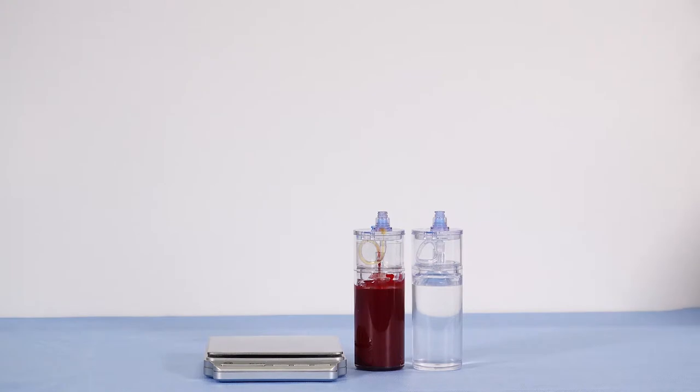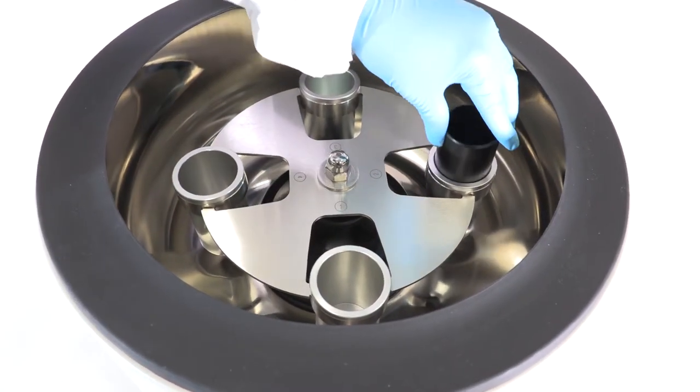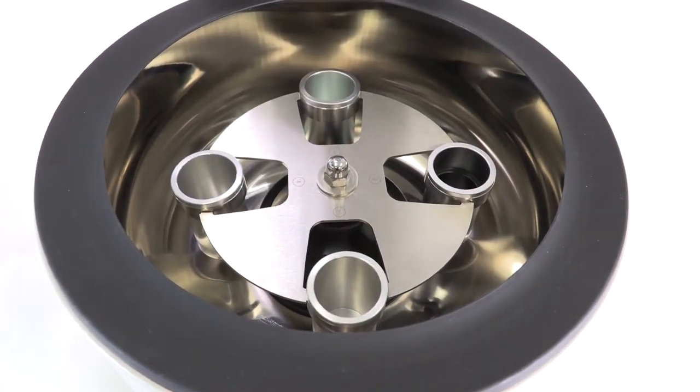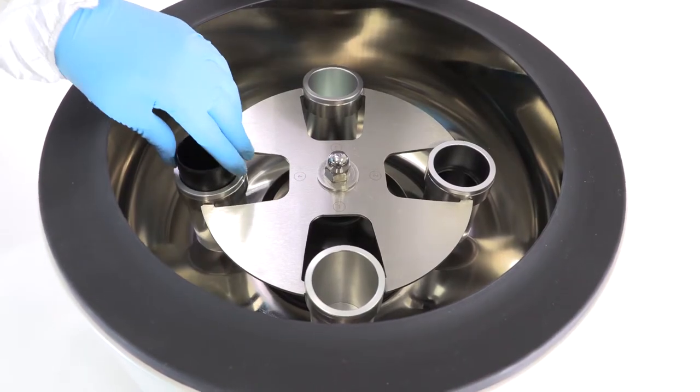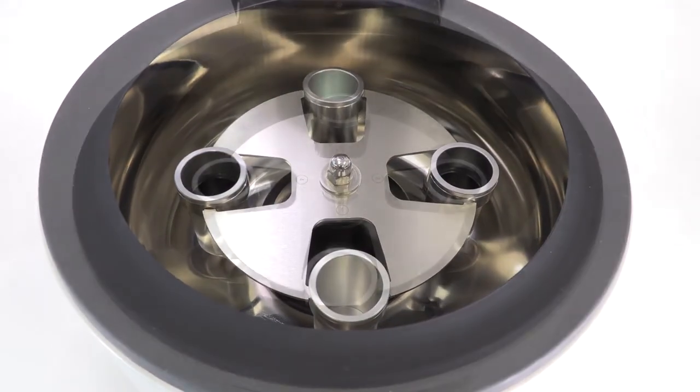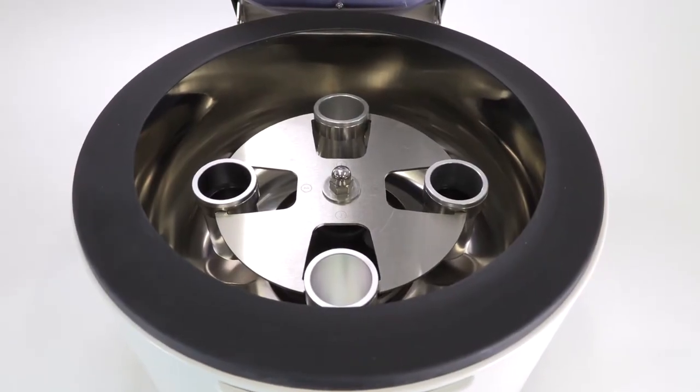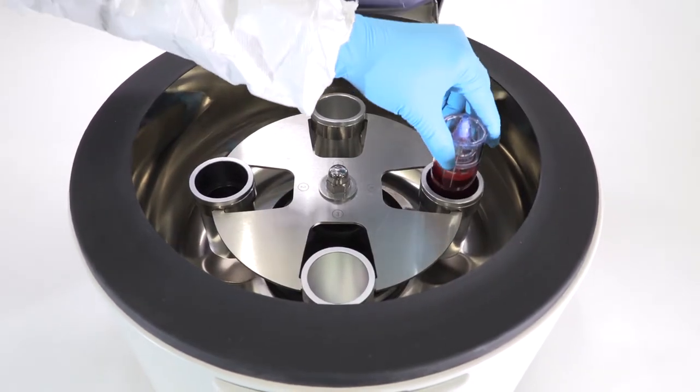Use the counterbalance device to counterbalance with equal volume. Place the thin inserts in the buckets as shown, and then place both devices in the centrifuge rotor at opposite ends.